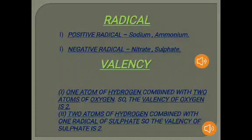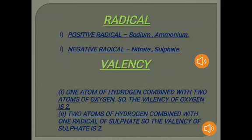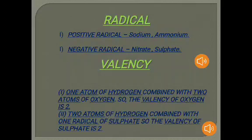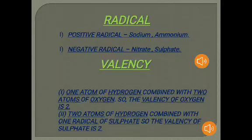For example, in water, one atom of oxygen is combined with two atoms of hydrogen, so the valency of oxygen is two. Another example: two atoms of hydrogen are combined with one sulfate radical, so the valency of sulfate is two. For elements that do not combine with hydrogen, we can determine valency by using the combining power with an element whose valency is already known.